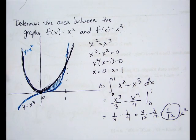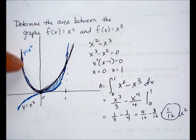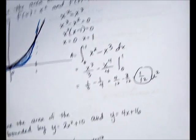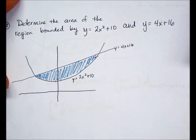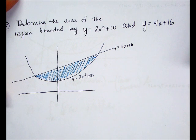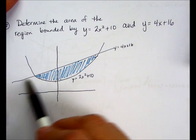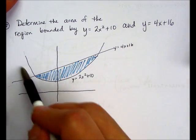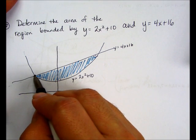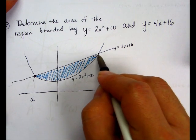Okay. Second example. Determine the area of the region bounded by y equals 2x squared plus 10, and y equals 4x plus 16. So here's 4x plus 16. This is linear. And then 2x squared plus 10. We need to find out what values this is for a, and this is for b.